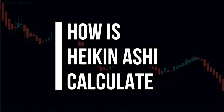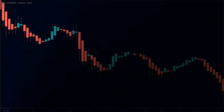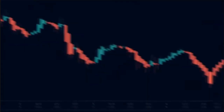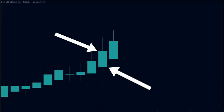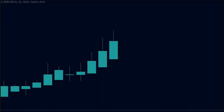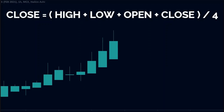Firstly, let us understand how the Heiken Ashi candles are calculated. The open of the Heiken Ashi candle is calculated by taking the open and the close of the previous candle and dividing it by two. In other words, the open of the candle is right in the middle of the body of the previous candle. The close of the candle is calculated by the average of the open, high, low, and close of the current candle.